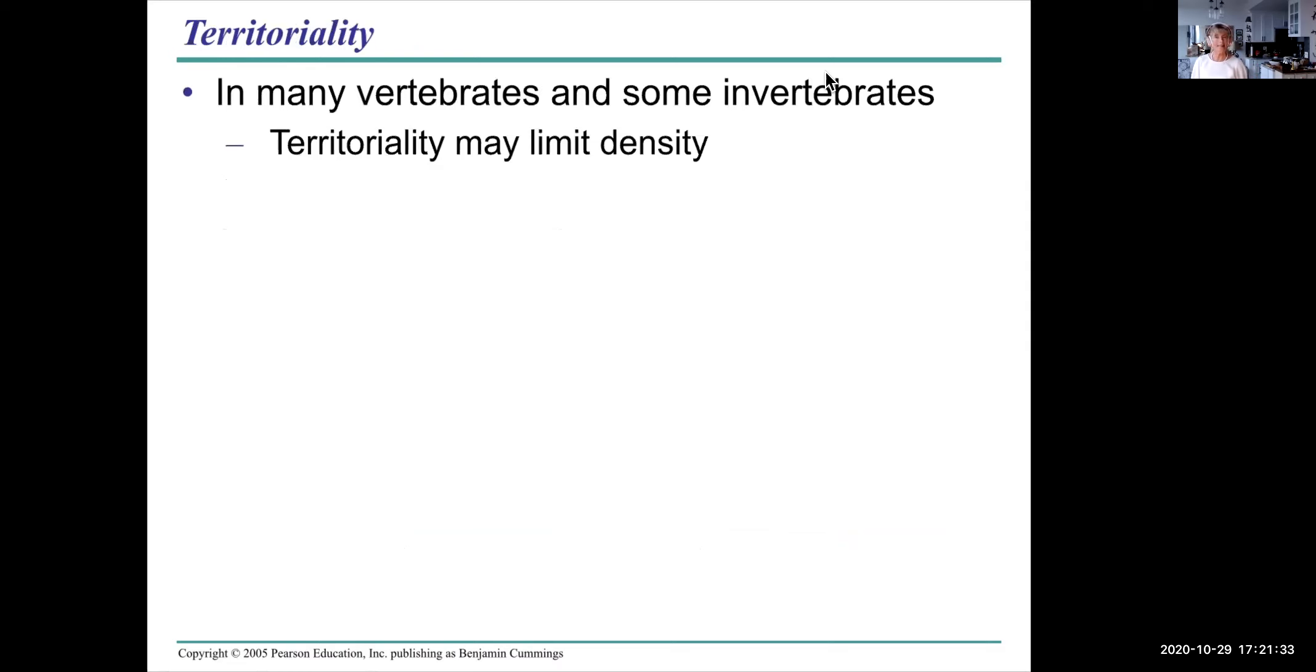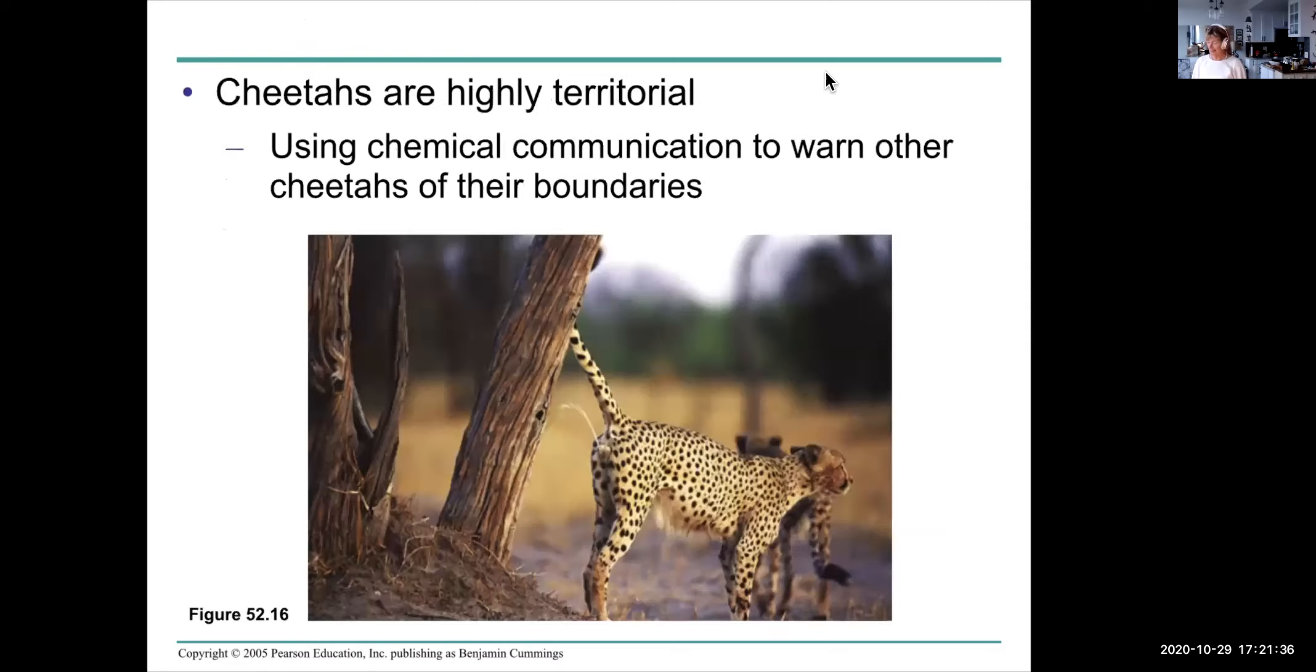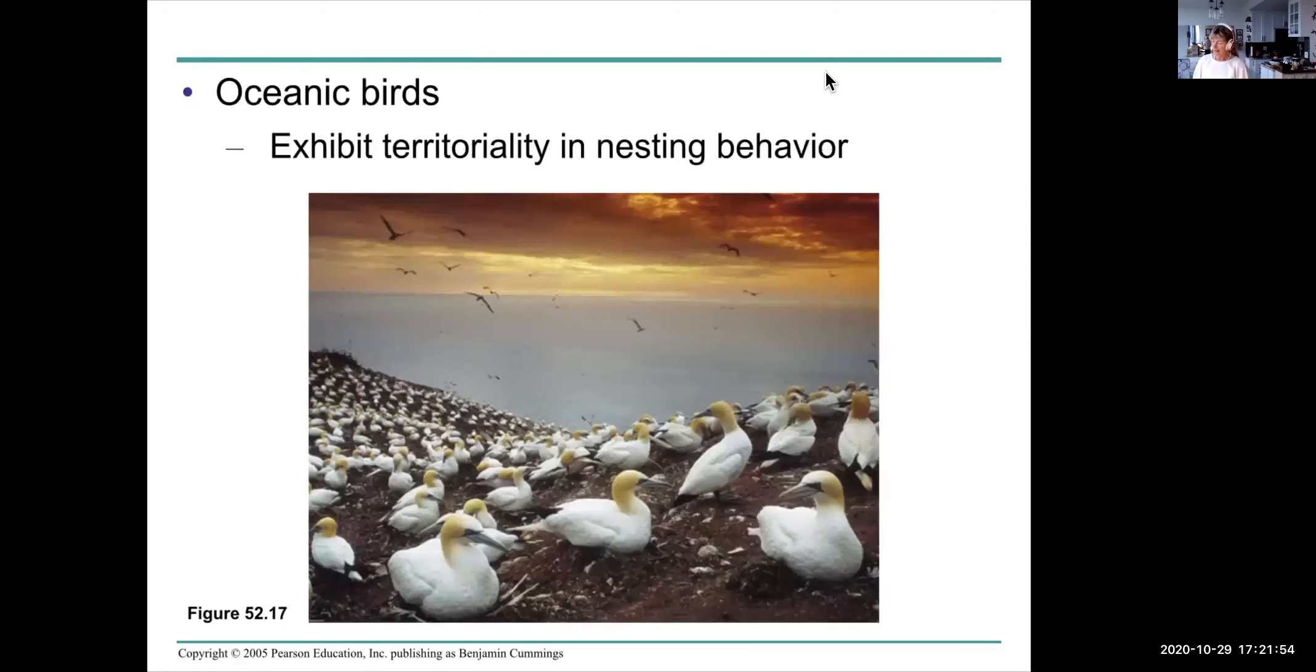Territoriality can also limit density. For example, cheetahs. This cheetah is peeing on the tree. It's using its urine as a chemical communication to warn cheetahs away from its territory. Gannets exhibit territoriality and nesting behavior. The density of these birds is limited to the space that's available for them to nest.